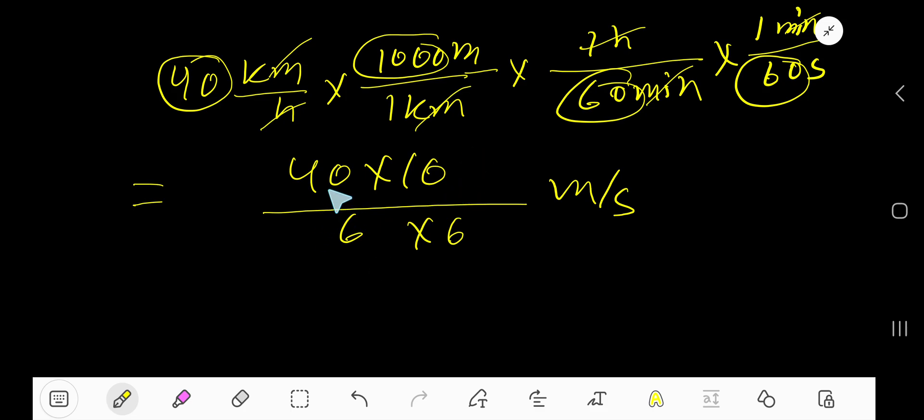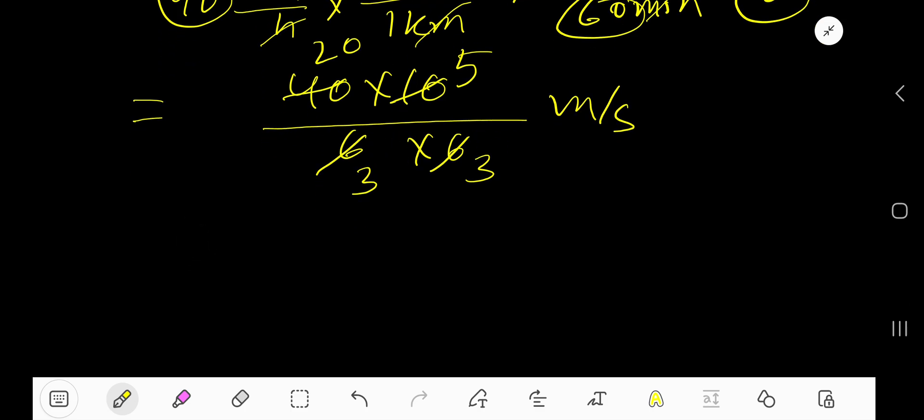Now, divide this 40 by 2, we will get 20. Divide this 6 by 2, we will get 3. Divide this 6 by 2, we will get 3. Divide this 10 by 2, we will get 5. So, you are getting 20 times 5, 100. Divide it by 9, meter per second.